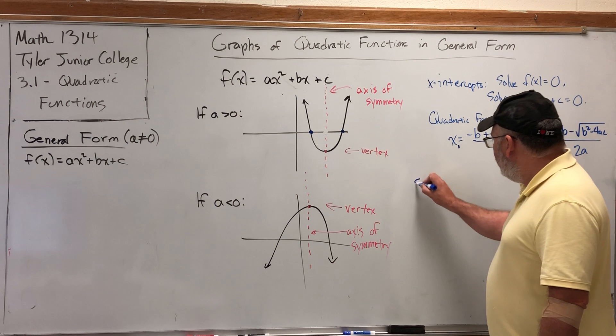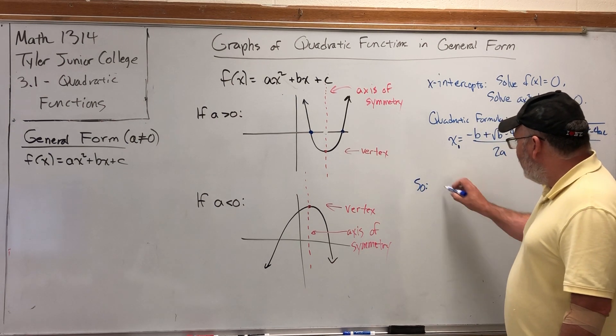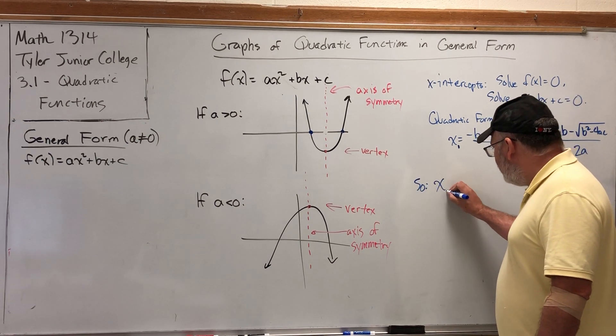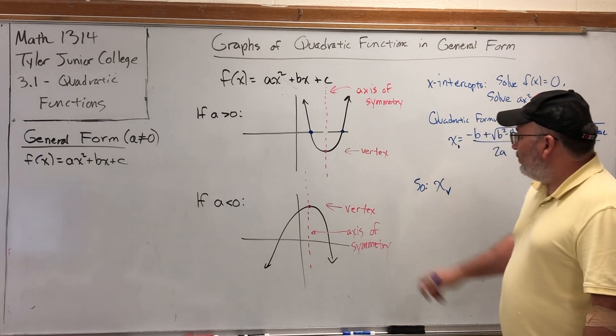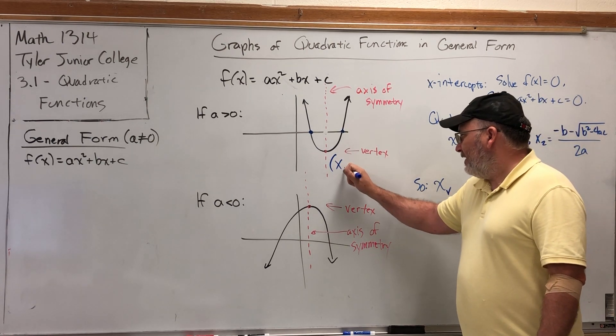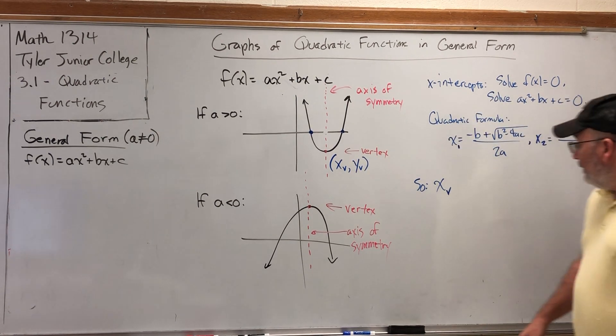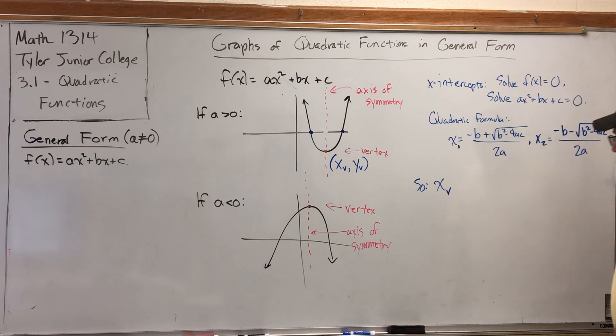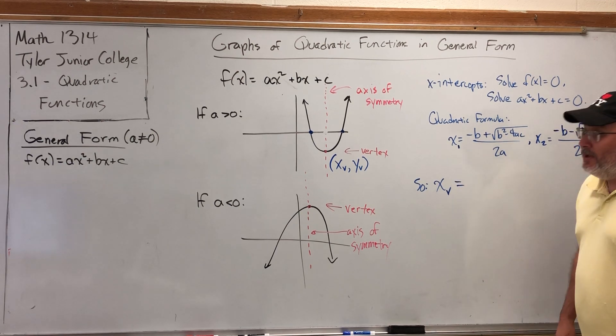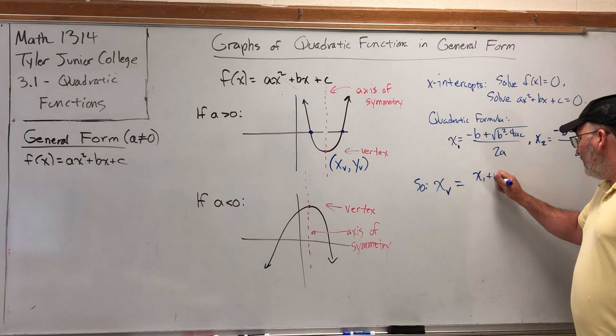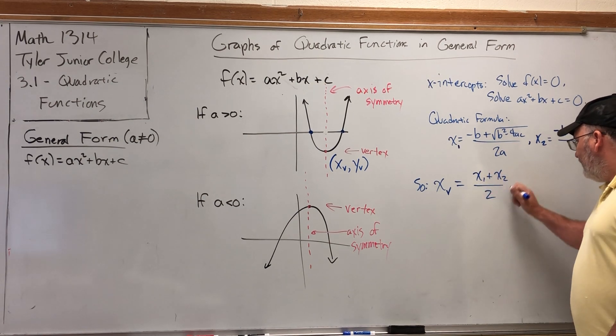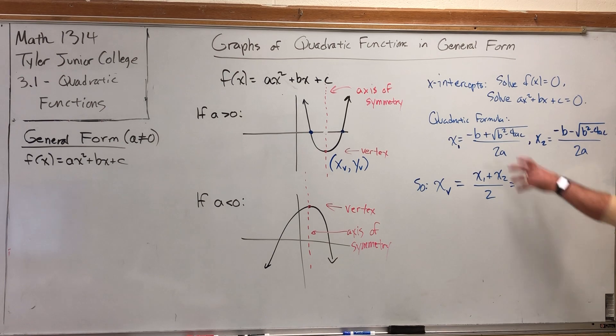Now we have our x-intercepts. We can locate the x-coordinate of the vertex by taking their average. I'm going to represent the x-coordinate of the vertex as x_v. To find it, we simply have to average the two x-intercepts.